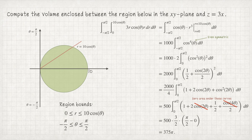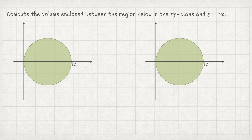The heart of this problem was setting up the bounds for the domain of integration, and I hope you enjoyed seeing the trigonometric integration as well. We've answered the question: the volume enclosed between this region and the graph of z = 3x is 375π. But I want to show you why polar coordinates was my preference, so let me set up two other integrals that compute the same value — one as dy dx (type 1) and one as dx dy (type 2).